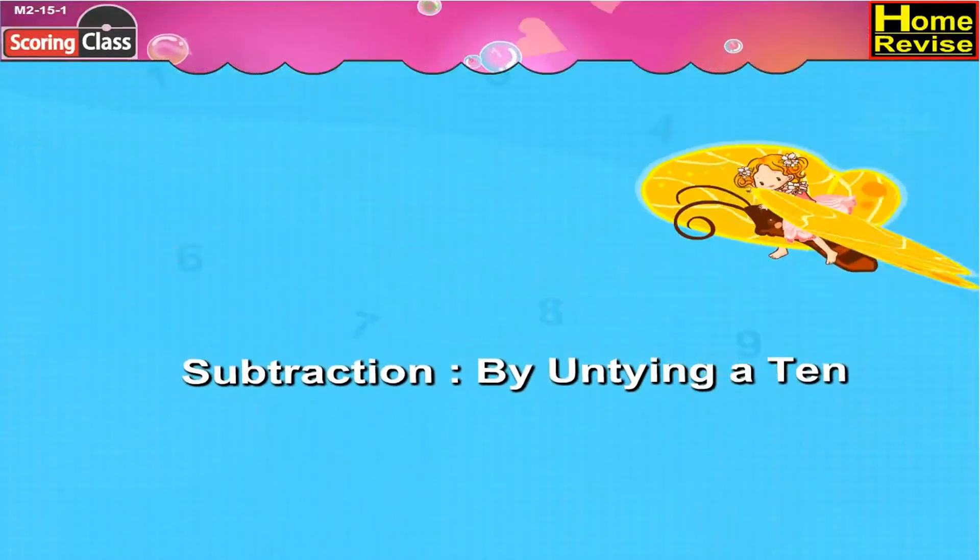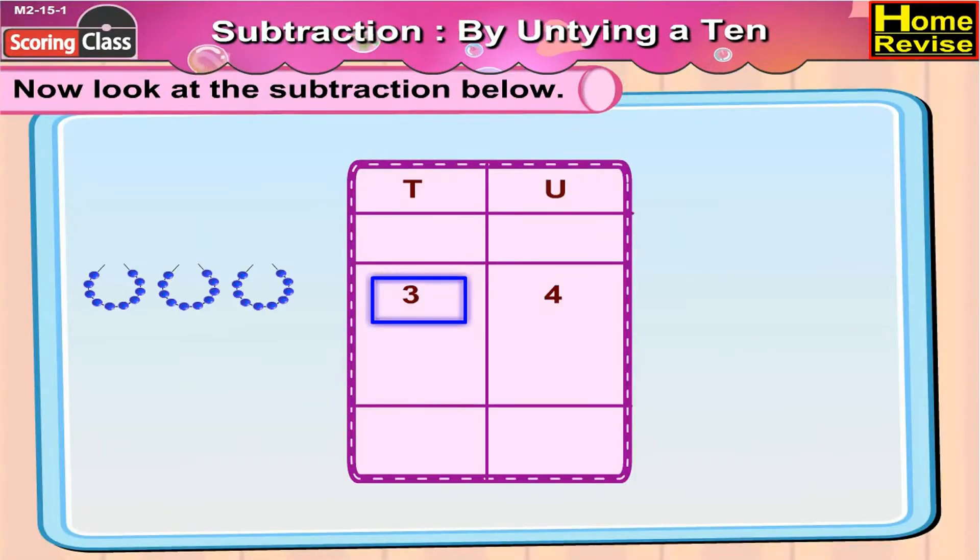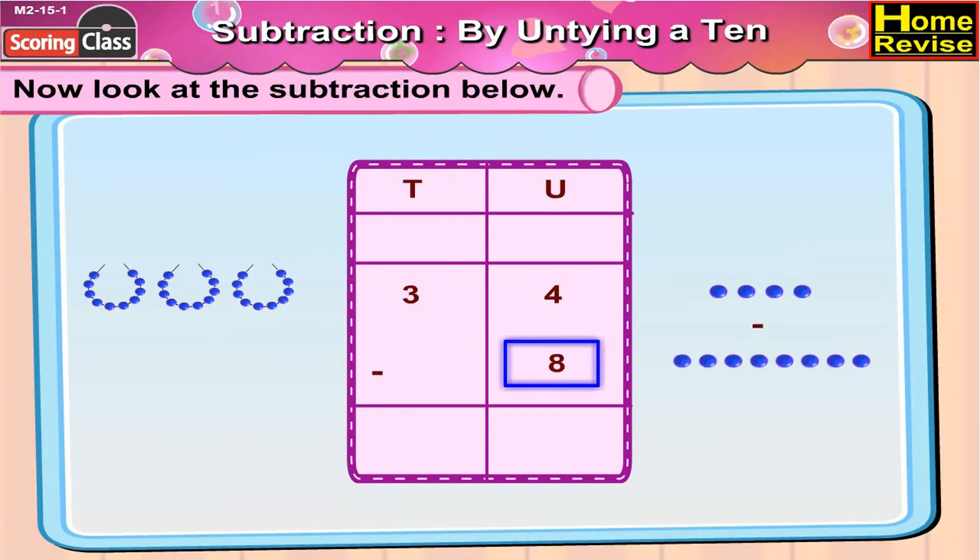Subtraction by untying a ten. Now look at the subtraction below. Here we have 3 tens and 4 units, and we have to subtract 8 units. You cannot subtract 8 from 4, so we'll untie 1 ten from 3 tens.